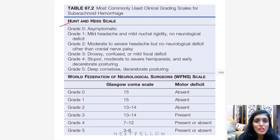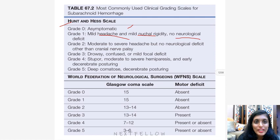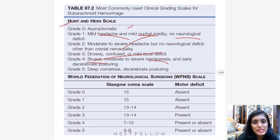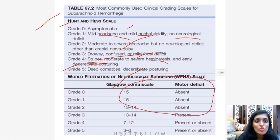The Hunt and Hess scale for subarachnoid hemorrhage: Grade 0 is asymptomatic; Grade 1 is mild headache and mild nuchal rigidity with no neurological deficit; Grade 2 is moderate to severe headache but no neurological deficit other than cranial nerve palsy; Grade 3 is drowsy, confused, or mild focal deficit; Grade 4 is stupor, moderate to severe hemiparesis, and early decerebrate posturing; Grade 5 is deep coma and decerebrate posturing. There is also the WFNS scale — World Federation of Neurological Surgeons — based on the Glasgow Coma Scale.